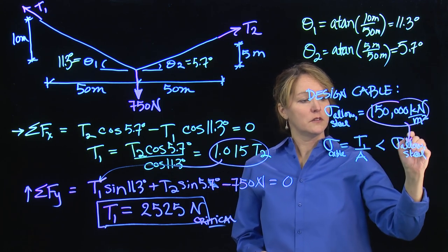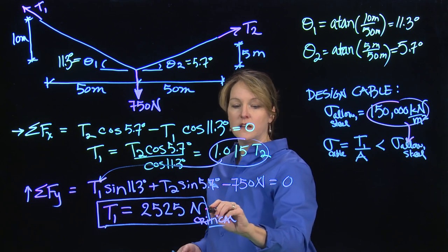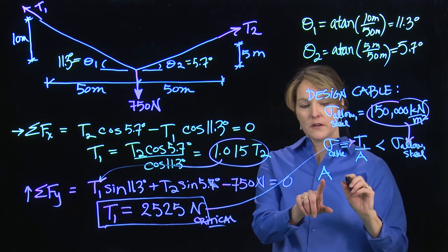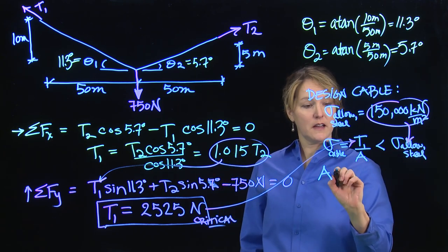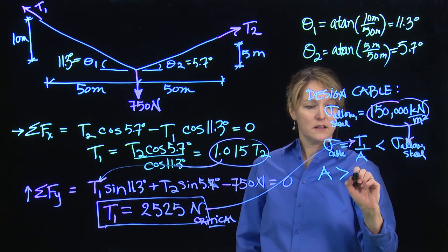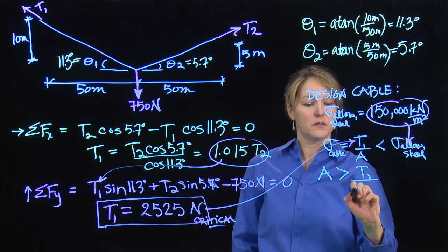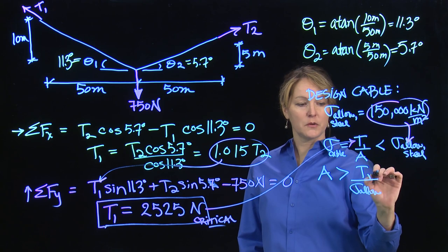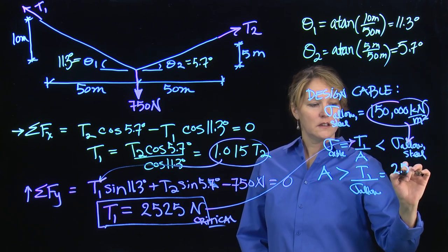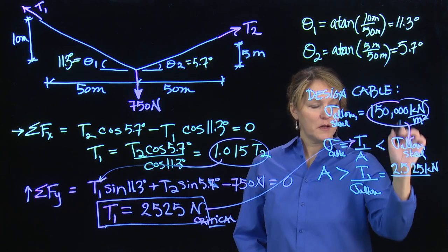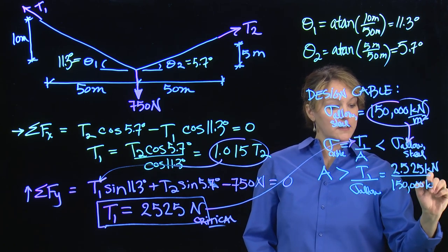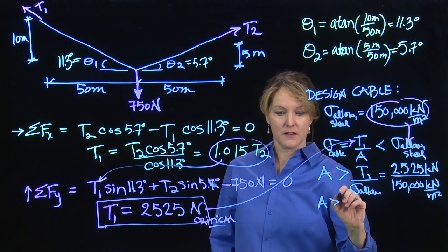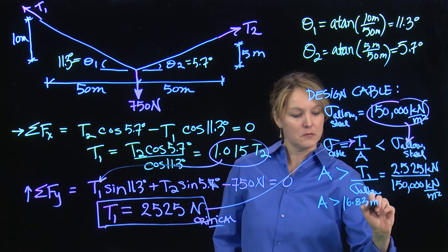So I could take this value, substitute it in for the allowable stress, and take T1 and substitute it in there. Then my only unknown is the cross-sectional area. So I can solve for the cross-sectional area. I get that the area has to be greater than this T1 over the allowable stress. T1 was 2,525 newtons. I'm going to change that to kilonewtons, 2.525 kilonewtons, divided by the allowable stress of 150,000 kilonewtons per meter squared. That tells me that the area has to be greater than 16.83 millimeters squared.